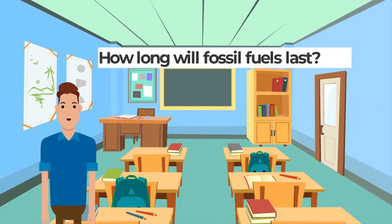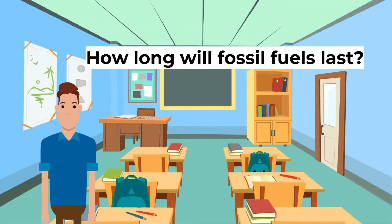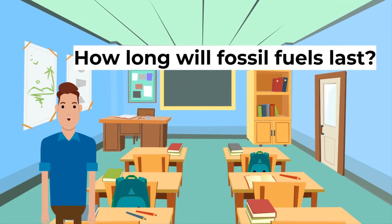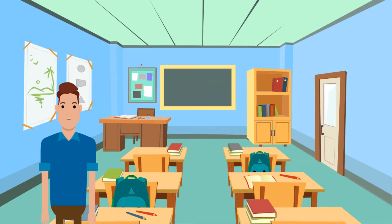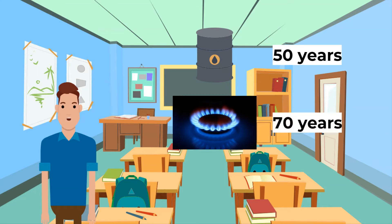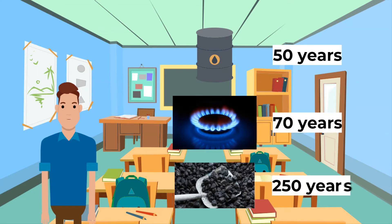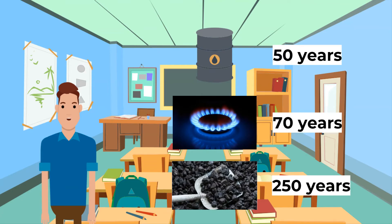How long will fossil fuels last? Estimates from international organizations suggest that if the world's demand for energy from fossil fuels continues at the present rate, oil and gas reserves may run out within some of our lifetimes. Coal is expected to last longer. Oil: 50 years. Natural gas: 70 years. Coal: 250 years.